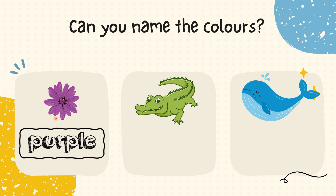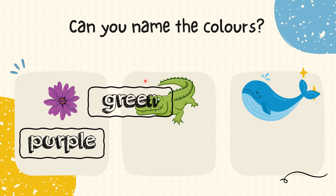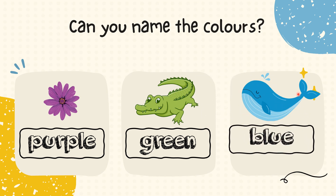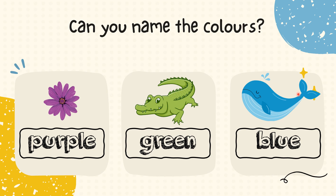Now let's look at the second picture. Do you know what colour is the crocodile? Great job, it is green in colour. Now look at the third picture. What colour is the whale? I bet you got it right — it is blue in colour. Great job, everyone.